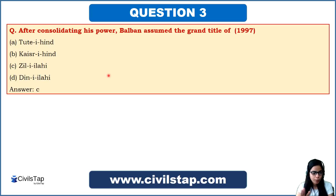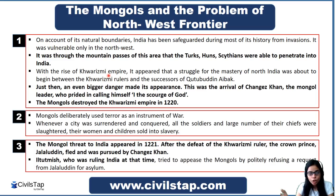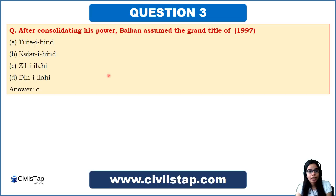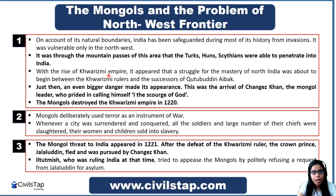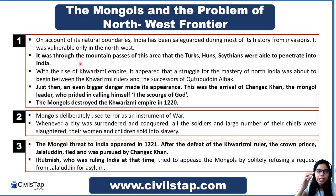Now our second topic: Mongols. We will see how Mongols came to India and the northwest frontier, which was the entrance of Mongols into India. India is safeguarded during most of its history from invasions because of natural boundaries, but it is vulnerable only in the northwest — the mountains and passes through which foreigners like the Turks, Huns, and Scythians have penetrated into India.